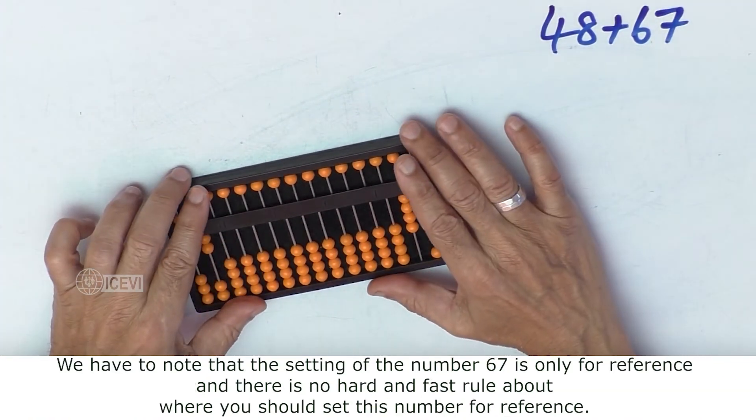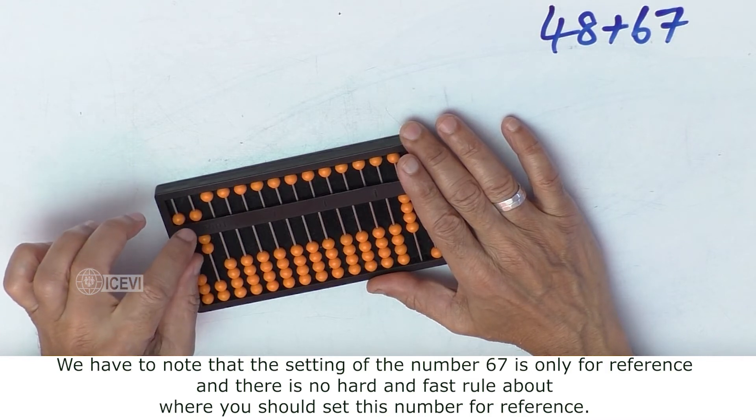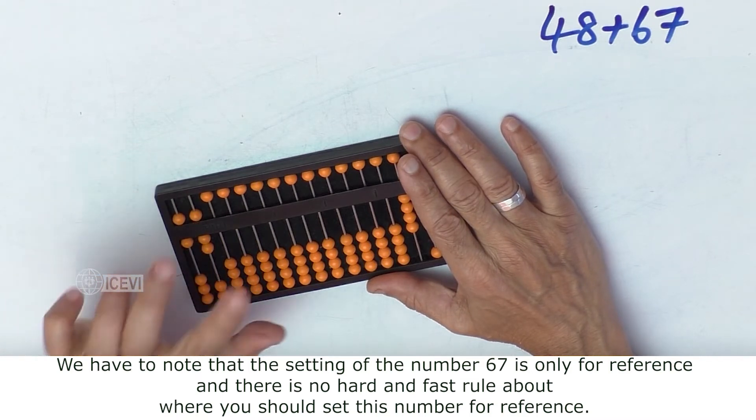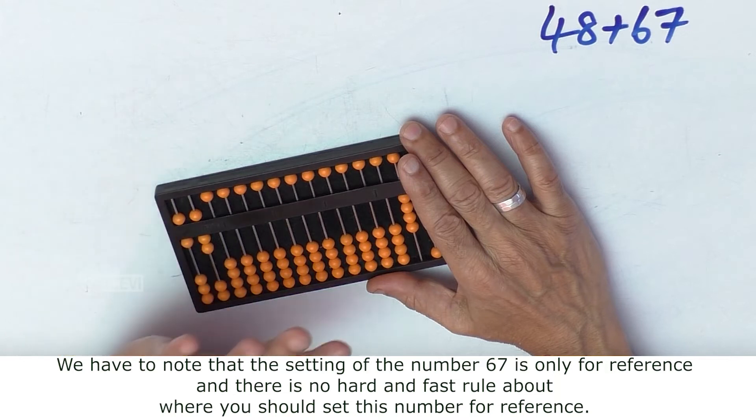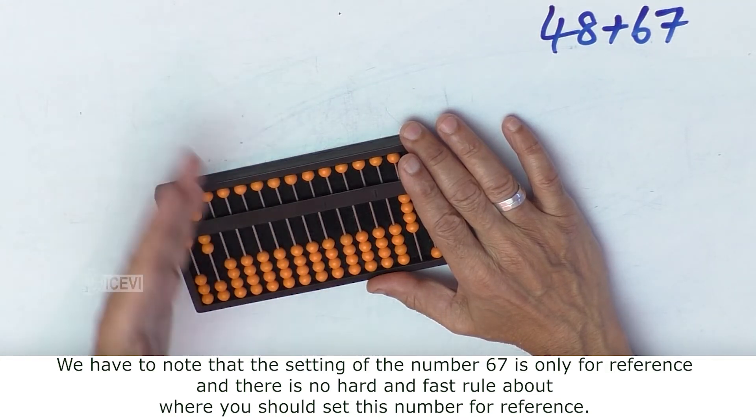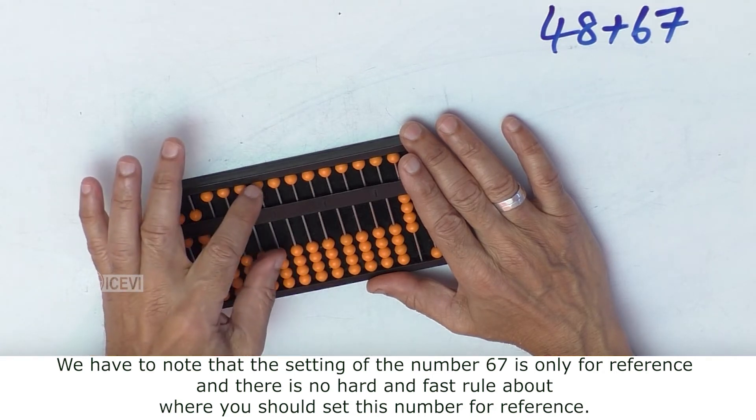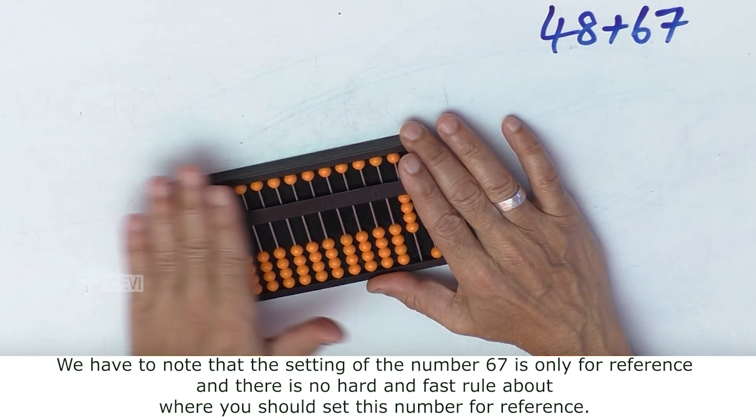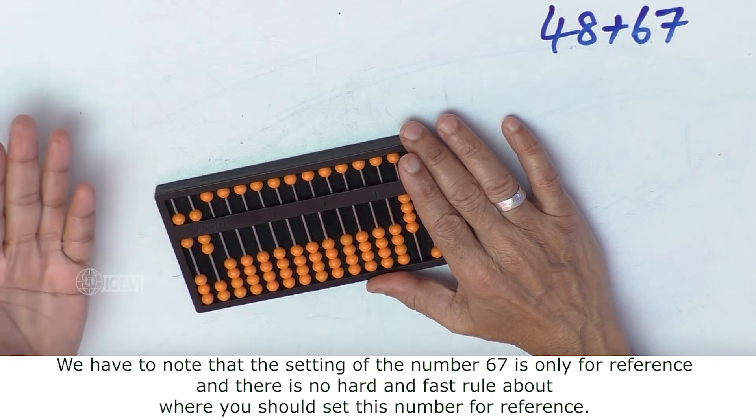We have to note that the setting of the number 67 is only for reference, and there is no hard and fast rule about where you should set this number. If the child is able to set this number somewhere on the abacus, it is fine.